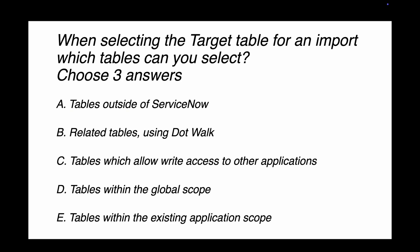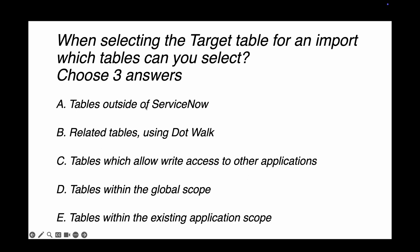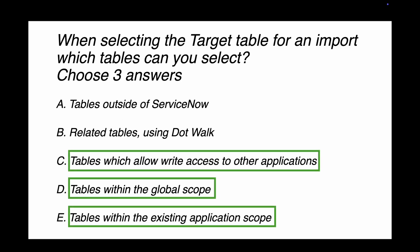Question number ten: when selecting the target table for an import, which tables can you select? Options are: tables outside of ServiceNow; related tables using dot-walk; tables which allow write access to other applications; tables within the global scope; or tables within the existing application scope. The correct answers are the last three: tables within the existing application scope, tables within the global scope, and tables which allow write access to other applications — since you need write access to import records. Tables outside ServiceNow or via dot-walk don't apply.